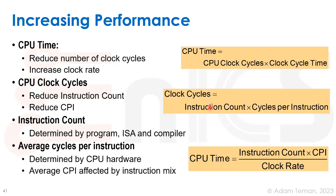Instruction count isn't straightforward — it's really determined by the program, the ISA, and the compiler. Different programs have different numbers of instructions. Different ISAs, like CISC versus RISC, may have fewer or more instructions. A better compiler optimizing for instruction count can reduce it depending on its objectives. Average CPI is determined by the CPU hardware — how many cycles it takes to carry out one instruction — but it can be affected by the instruction mix, which depends on the program and compiler.